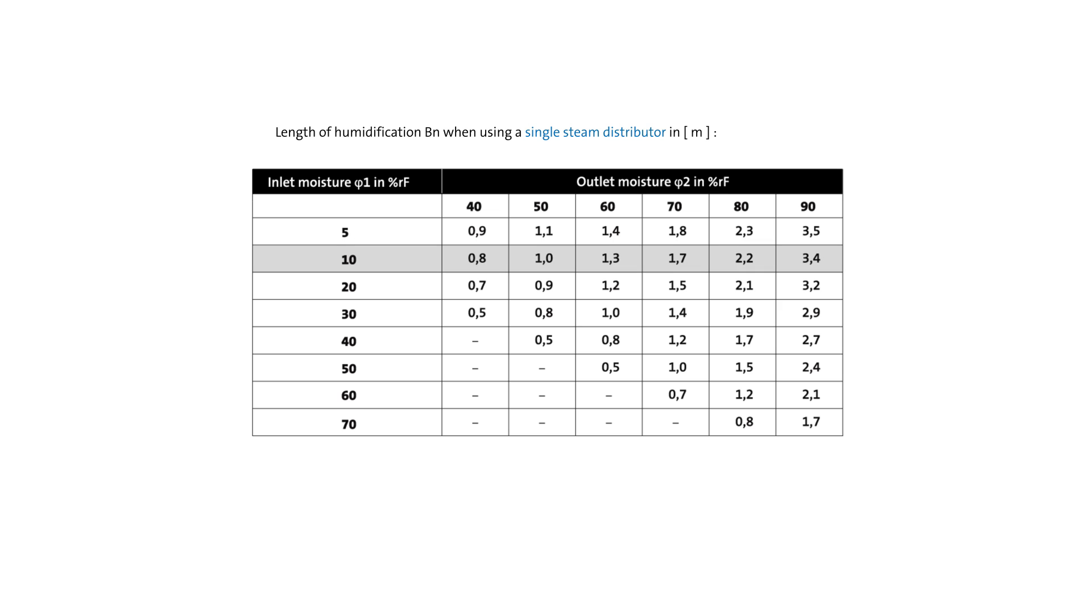If the relative humidity of the inlet air amounts to 10% relative humidity and the required relative humidity of the outlet air is 50% relative humidity, a humidification distance BN of 1 meter must be maintained.